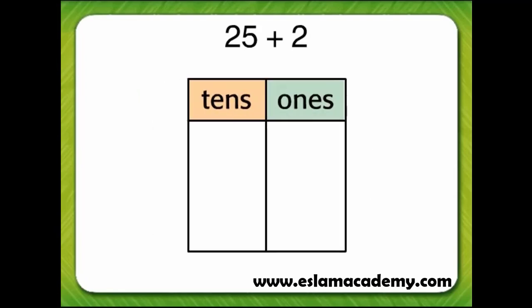The first addend is 25. There are two tens and five ones in 25. The second addend is 2. There are two ones in 2.